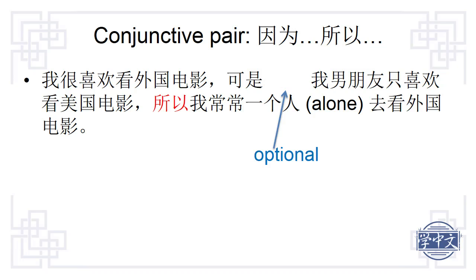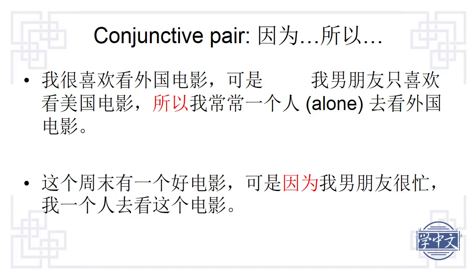Next example: 这个周末有一个好电影,可是因为我男朋友很忙,我一个人去看这个电影。 (There was a good movie this weekend, but because my boyfriend was busy, I went to see this movie by myself.) This sentence has 因为 but 所以 is missing. Without 所以, the sentence is not considered correct grammatically.